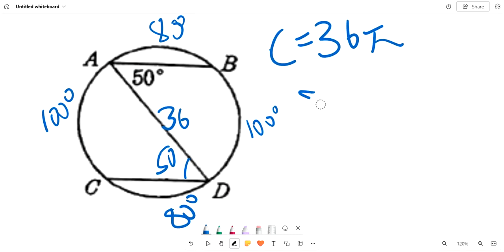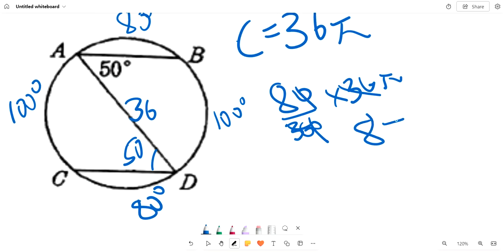Then we do 80 over 360 times 36 pi, because that's how you calculate the arc measure from circumference and degree measure. So we subtract this, subtract this, oh it's pi, and so we get 8 pi as arc AB.